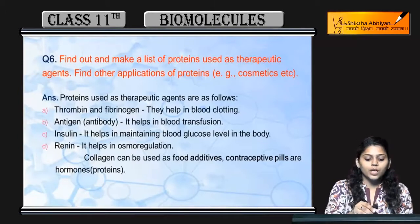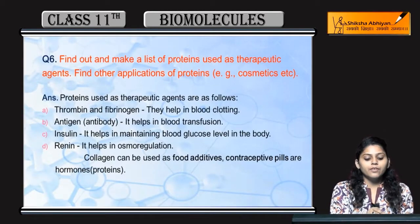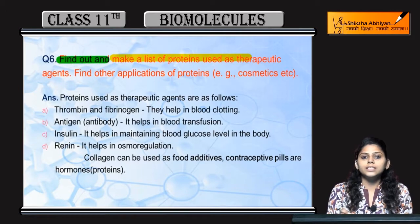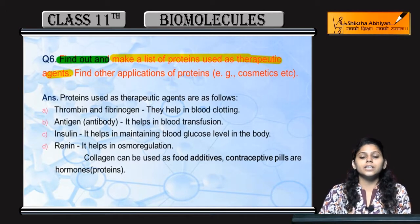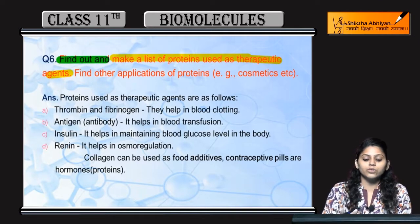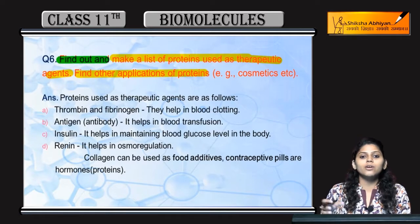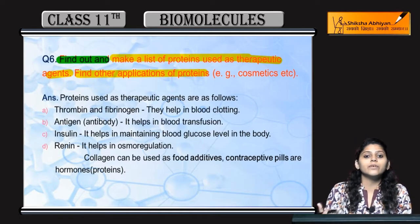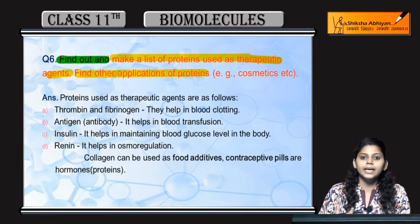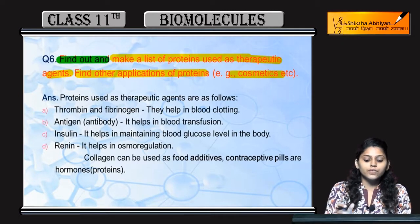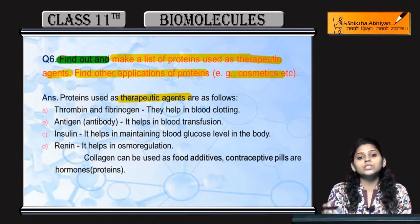Question number six: find out and make a list of proteins that are used as therapeutic agents. We need to tell which proteins are used, find other applications of proteins as therapeutic agents, and on which application they are used — for example, cosmetics.